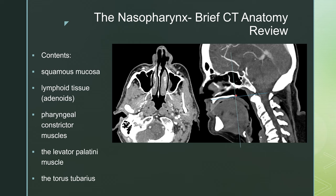Remember, the nasopharynx is behind the hard palate and below the clivus. The contents of the nasopharynx include the squamous mucosa lining the nasopharynx, the lymphoid tissue (aka adenoids), the pharyngeal constrictor muscles, the levator palatine muscle, and the torus tubarius.